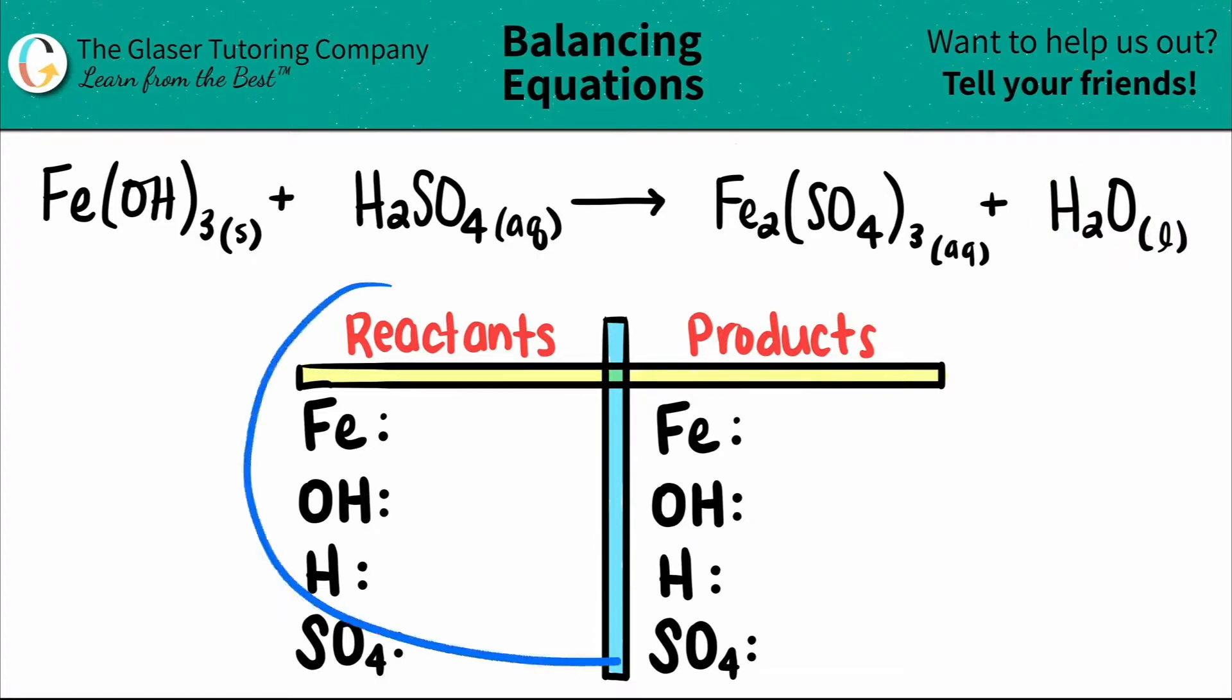So I already wrote out our chart here and all the elements or the polyatomics that I see that are on both sides. Now, all we have to do is just put the numbers. I see that I have an iron here. Iron is Fe. There's no coefficient. That means that there's one. So I'm just going to say that I have one iron.